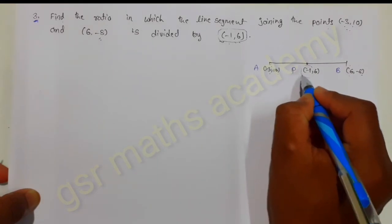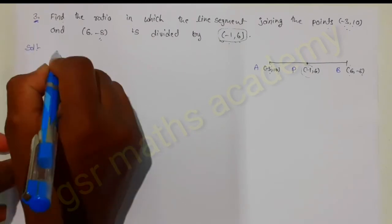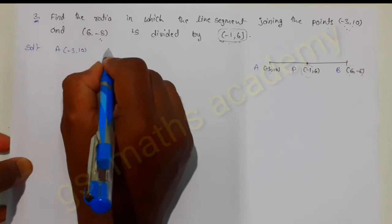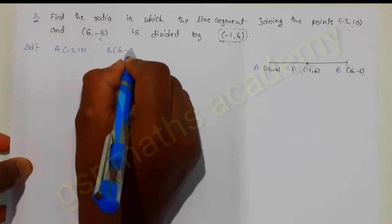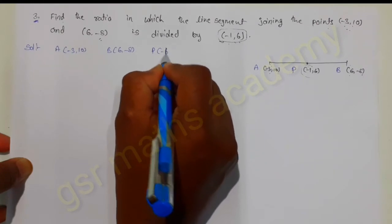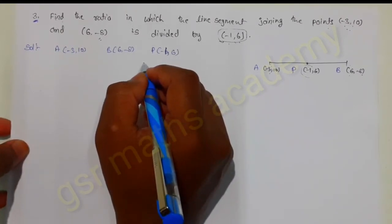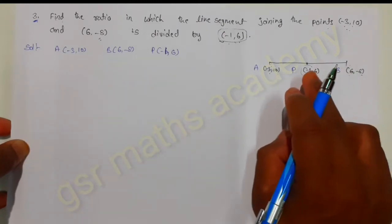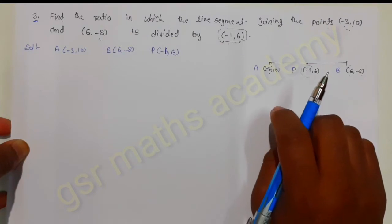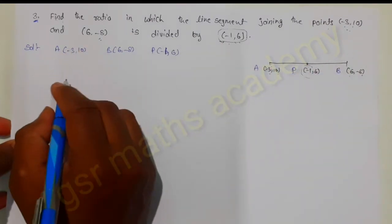Let point P be minus 1 comma 6. So let me write the solution: let point A be minus 3 comma 10, point B be 6 comma minus 8, and point P be minus 1 comma 6. We need to find the ratio in which point P divides line segment AB.